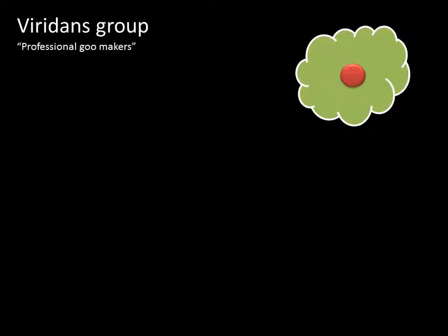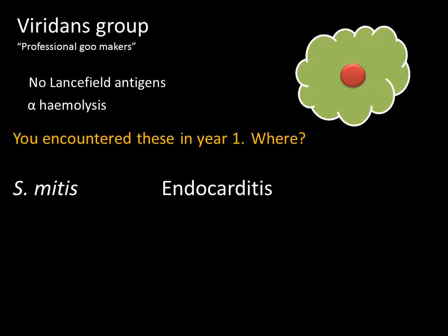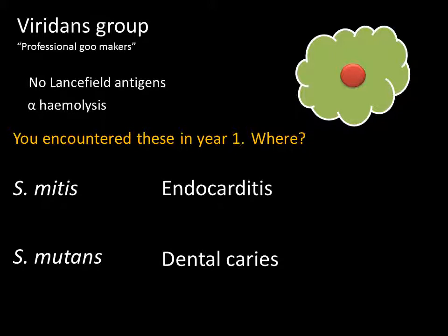Not all strains can be assigned to a group, meaning they lack antigens in their cell wall that allow them to be typed. One group you'll have heard of is the Viridans group strep - the professional goo makers, as I refer to them. These are cells with an intact cell wall that just lack the antigens allowing them to be grouped into A to U. Viridans group strep are those considered to be alpha hemolytic. You'll have come across these when considering endocarditis - the example here was Streptococcus mitis - and also Streptococcus mutans, which causes dental caries. These are all examples of Viridans group strep.